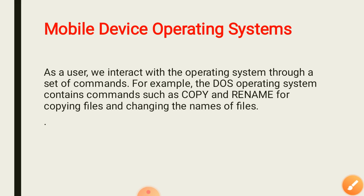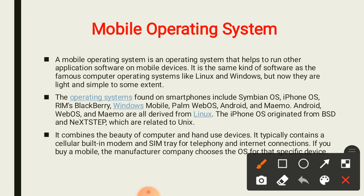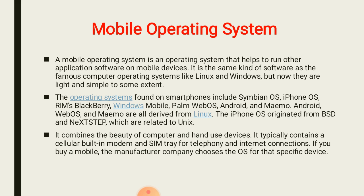Now, the mobile operating system is the operating system that runs other applications. It helps to run application software on mobile devices. For mobile operating systems, examples include Symbian OS, iPhone OS, BlackBerry, Windows, and Android. One of the key features is that it combines the capabilities of a computer with mobile hardware. It typically contains a cellular built-up modem and SIM tray for telephony and internet connections, because a mobile device combines computer applications as well as a SIM.